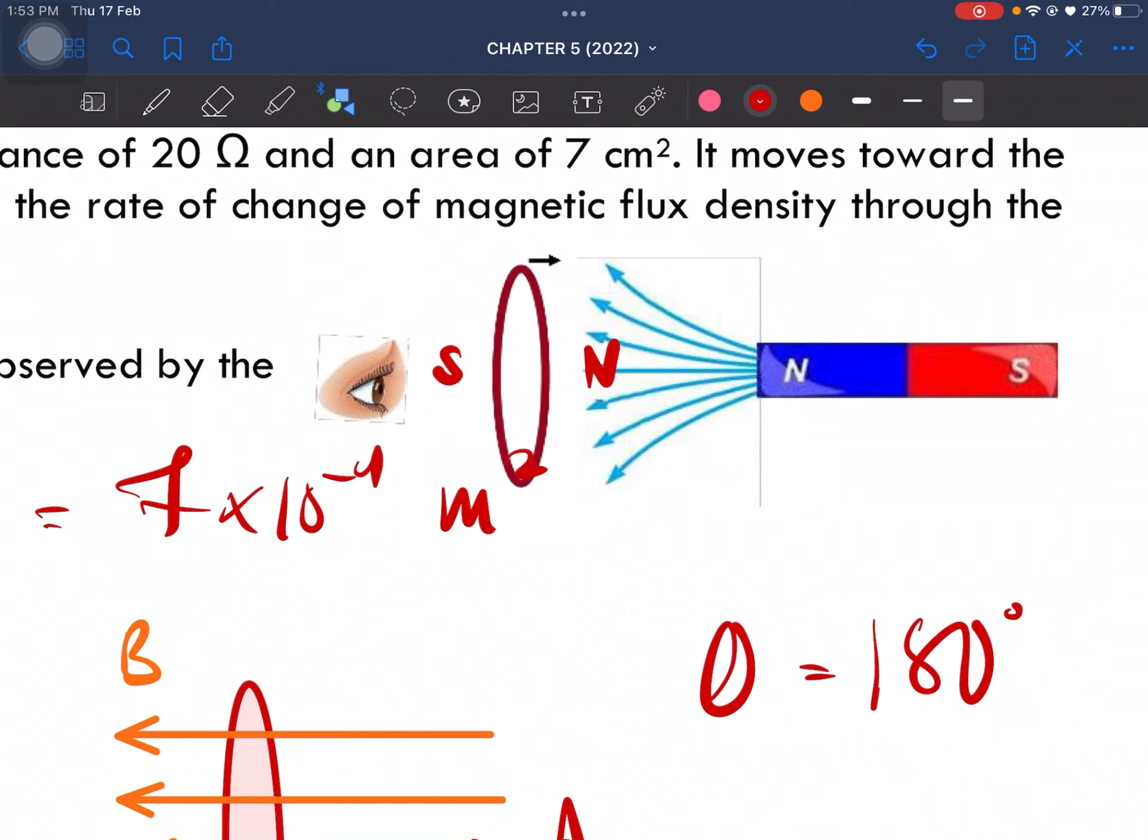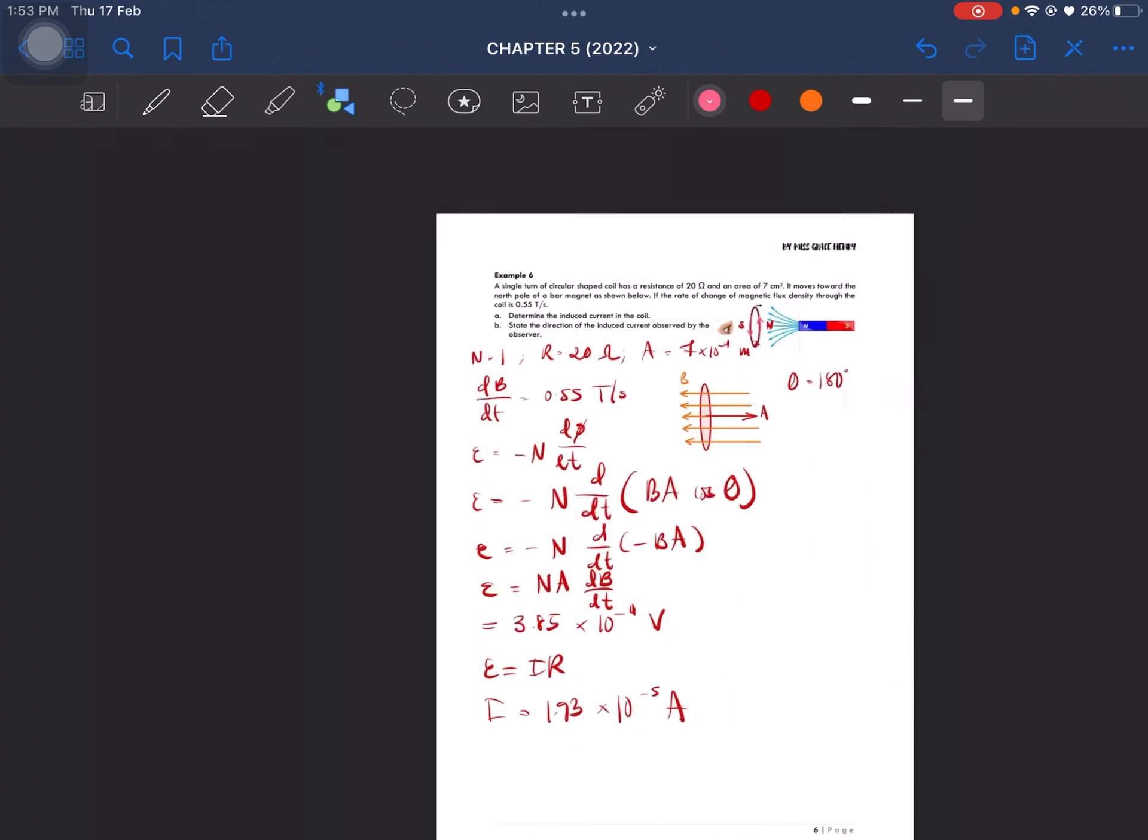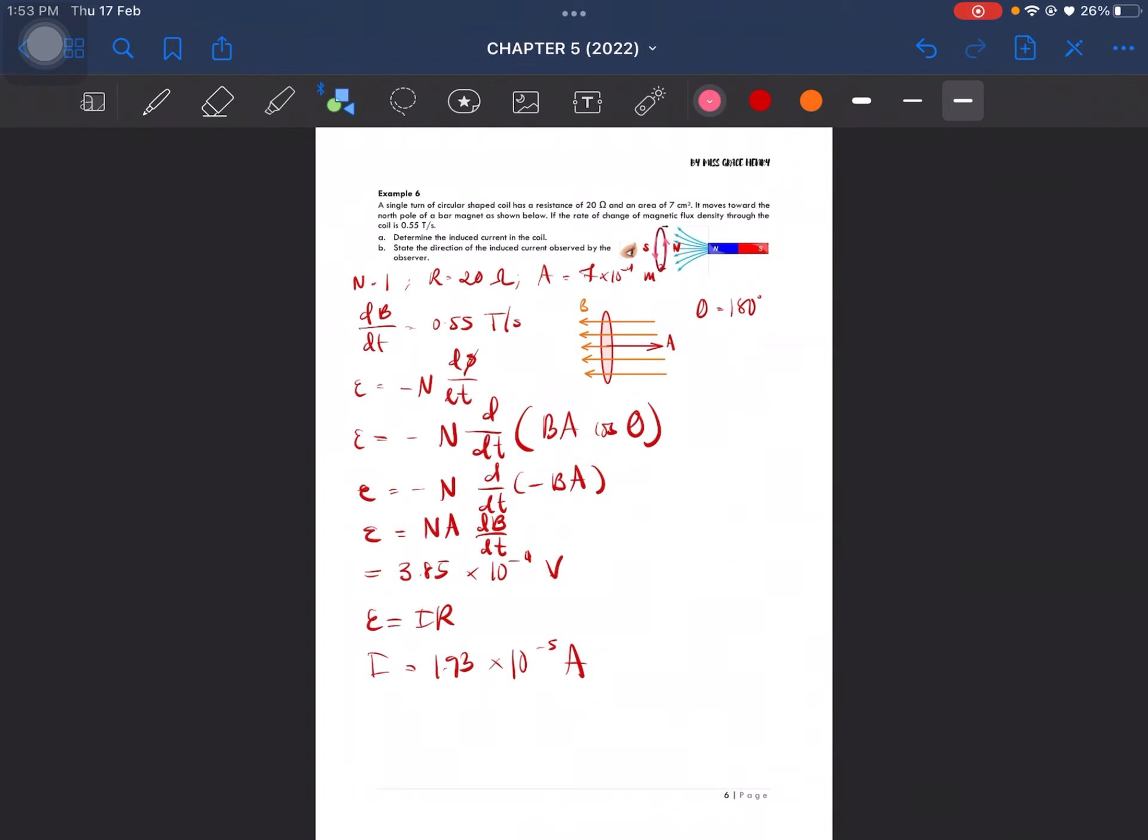Our induced current will then be... clockwise? Anti-clockwise? Clockwise. So this is the induced current. That is on example number six.